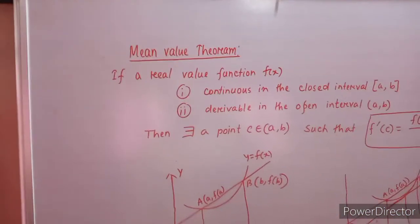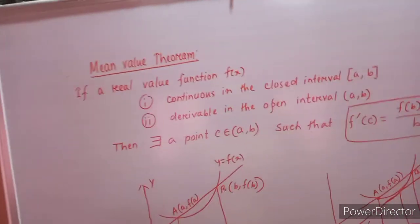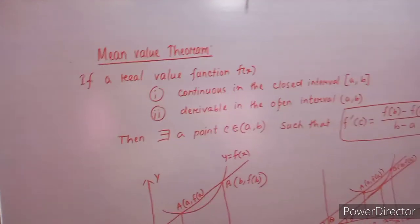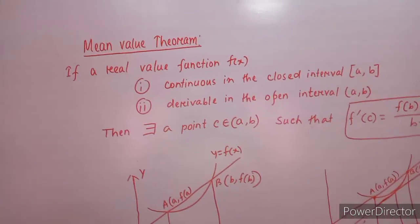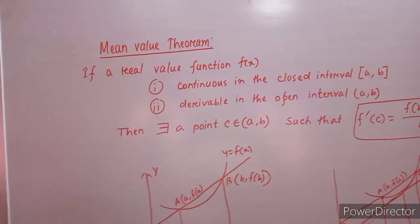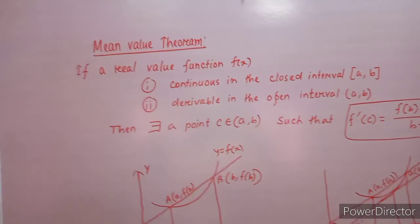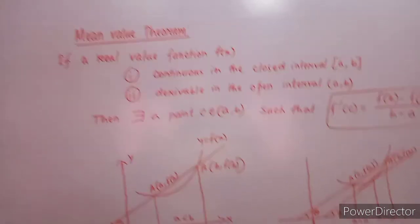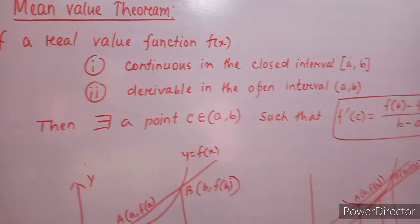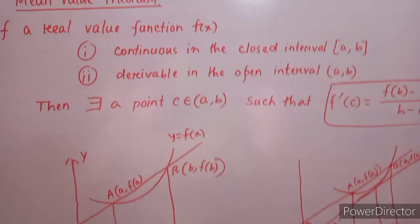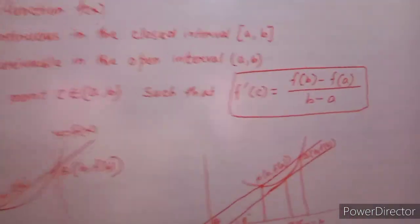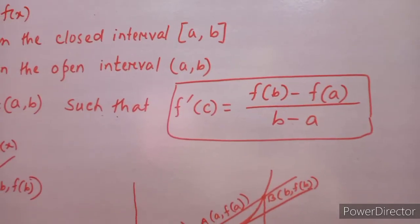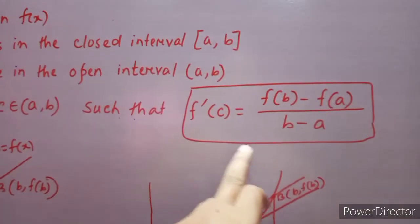The Mean Value Theorem is quite similar to Rolle's Theorem except for two statements. In Rolle's Theorem there is an additional statement: f(a) equals f(b), and there exists a point C in (a, b) such that f'(c) equals zero. But in the Mean Value Theorem that third statement is absent, and the conclusion is f'(c) equals f(b) minus f(a) divided by b minus a — here f'(c) is not equal to zero.